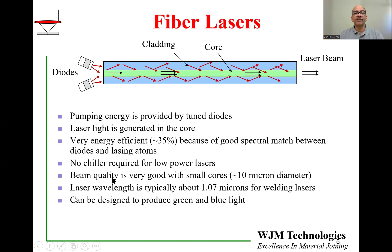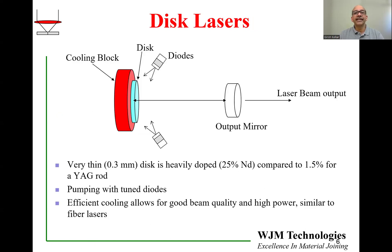There are other benefits of fiber lasers as well. The beam quality is much better. The laser wavelength is typically one micron, but you can tune it for other wavelengths including blue, green, and even two microns for welding of plastics. There are a lot of flexibilities and opportunities with fiber lasers. The disc laser, another technology from about 25 years ago, produces lasing action in a disc heavily doped with neodymium, and pumping is also done with diodes. The layout is otherwise similar to YAG lasers, with an output mirror and a 100% mirror at the back of the disc. Disc lasers are quite efficient and very similar in many ways to fiber lasers.